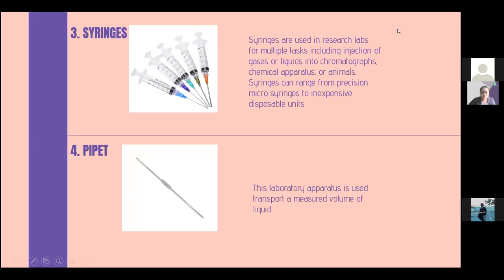The third one is the syringes. Syringes are used in research labs for multiple tasks including injection of gases or liquids into chromatographs, chemical apparatus, or animals. It can also range from precision micro syringes to inexpensive disposable units. The fourth one is the pipette. Pipettes are laboratory apparatuses used to transport a measured volume of liquid. There are also different kinds of pipettes and this picture is an example of volumetric pipette. Now I'm passing the stage to Ms. Guenzel to continue the reporting.